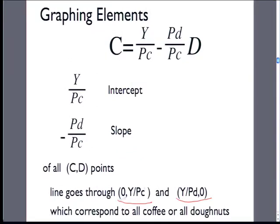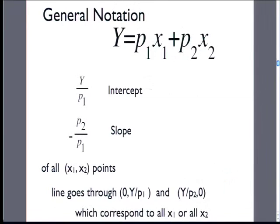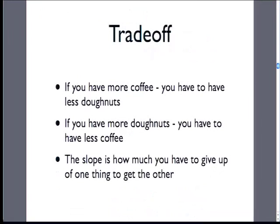Now we can easily graph: the intercept is the just-coffee point, and we can also solve for the just-donuts intercept on the other axis. Because it's a straight line, knowing two points where the line crosses the axes makes it easy to draw. The slope of the budget constraint is the price ratio, telling you how much you have to give up of one good to get more of the other — the trade-off between the two. In general notation you'll see this written as P1*x1 + P2*x2 = Y.